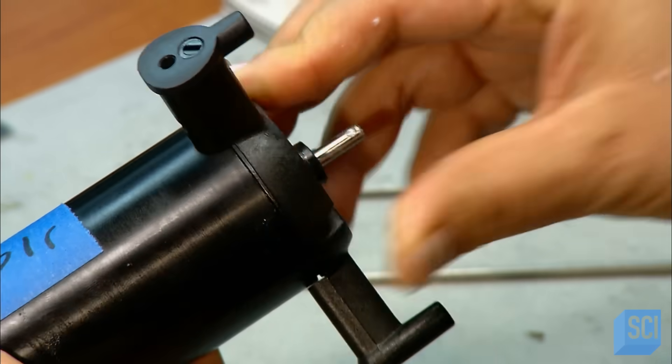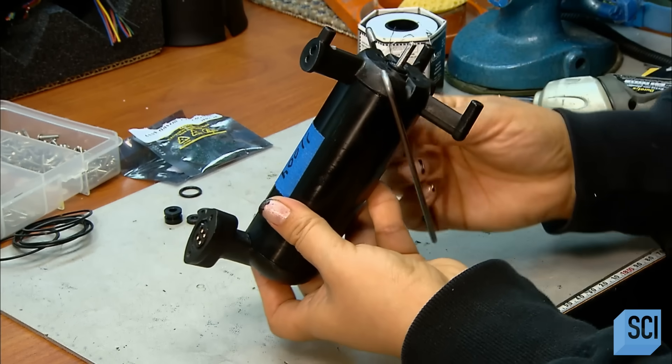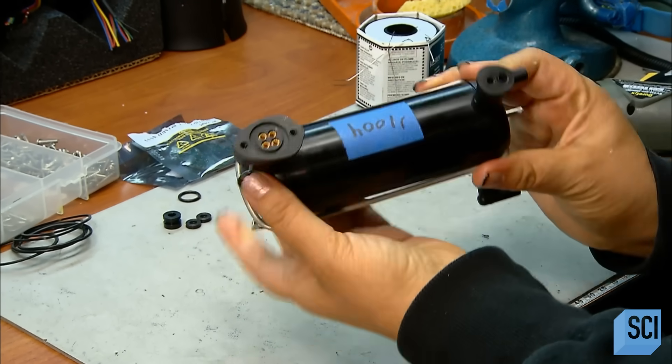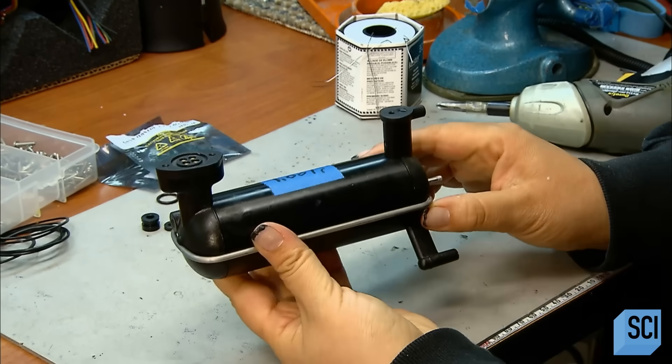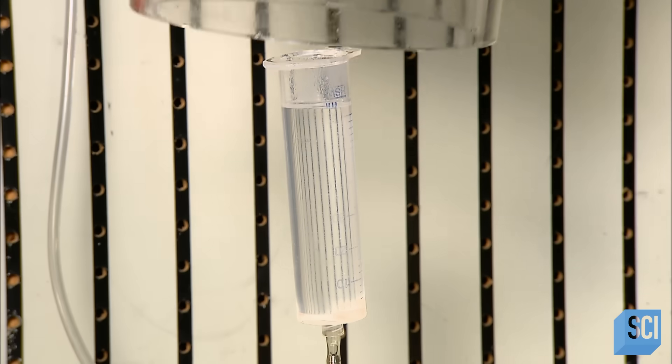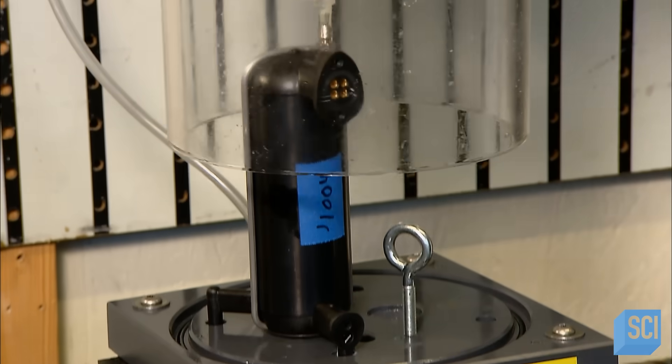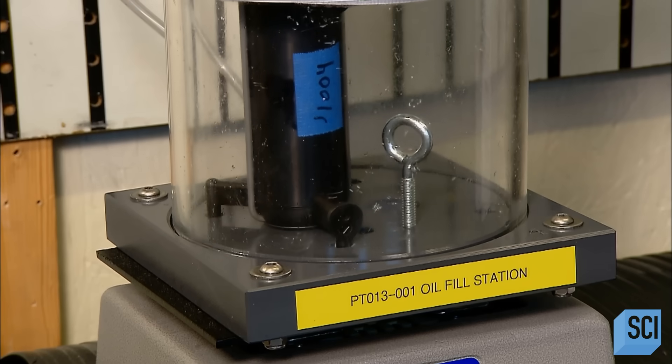The motor shaft protrudes through the propeller end cap. A mechanical bale secures both thruster end caps to the housing. They fill the thruster with oil. This prevents the thruster from imploding under pressure as the robot descends deeper and deeper.